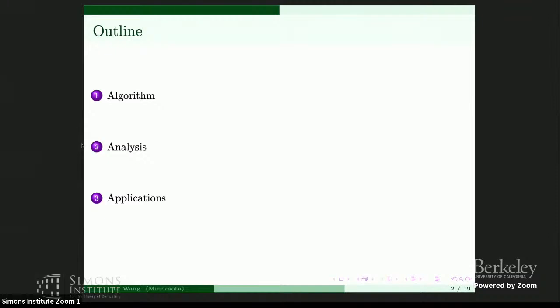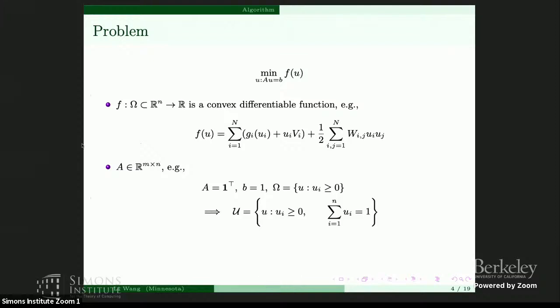Here's the outline: first I will give an introduction to the algorithm, which is a special type of mirror descent, then present some convergence analysis results, and then apply this method to compute the gradient flow. The problem we are considering is a linear constraint optimization, where f is a convex differentiable function from omega to R. Omega is a subset of R^n, so u is a vector of size n. F can take the form of an energy potential, which appears in many places such as aggregation dynamics, kinetic description of granular gas, or mean field limit of neural networks. A is a matrix of size m by n, and we assume m is much smaller than n, so we have a very limited amount of constraints.